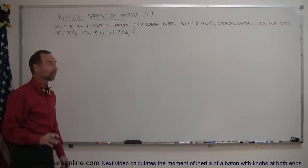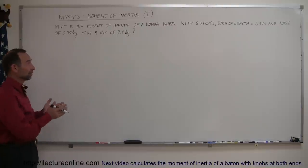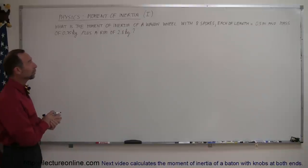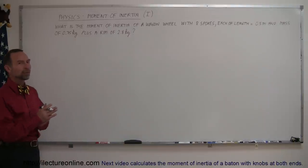Welcome to Electron Online and here's a good example of how to calculate the moment of inertia of an interesting object. Let's pick a wagon wheel. It says here what is the moment of inertia of a wagon wheel with eight spokes, each of length 0.5 meters and mass of 0.75 kilograms plus a rim of 2.8 kilograms.